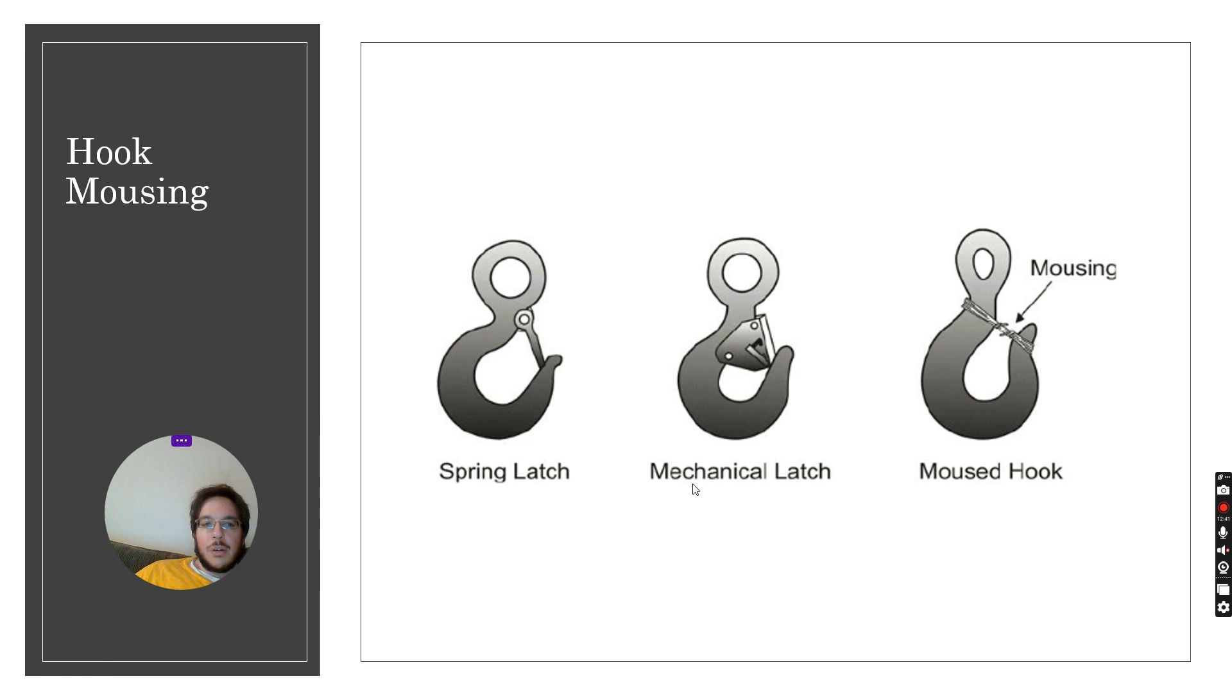And so we look at what we call a mousing. The mousing tells us how the hook secures. We've got one with a spring latch, just a standard spring loaded latch. Then we've got one with a mechanical latch which requires a little bit more action to release. Just pushing on it won't release, it's like a three-step process. And then we've got a moused hook.